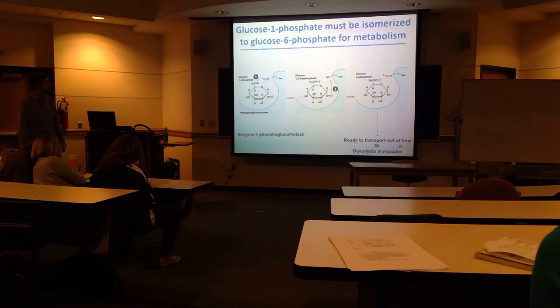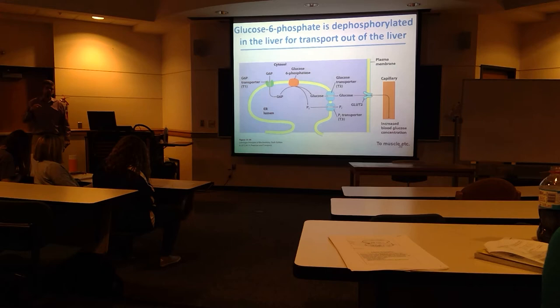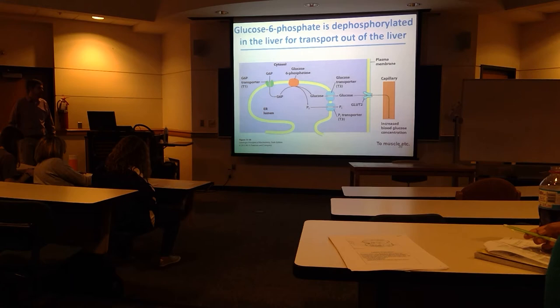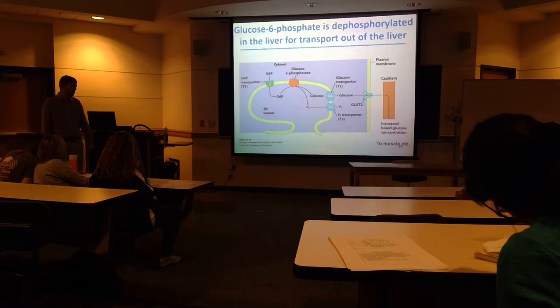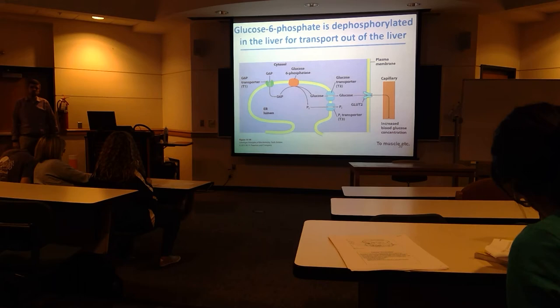If the liver wants to export glucose, remember that glucose-6-phosphate can't be transported out through the glucose transporter — you have to dephosphorylate it first. It has to be plain glucose. Glucose-6-phosphatase, the last step of gluconeogenesis, can function here too in the liver to dephosphorylate glucose-6-phosphate that was broken down from glycogen, so we can export glucose out into the blood and increase blood glucose levels.